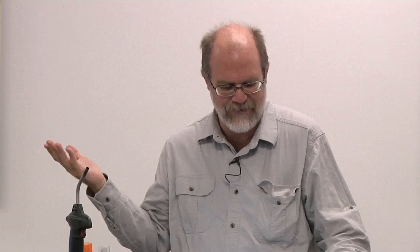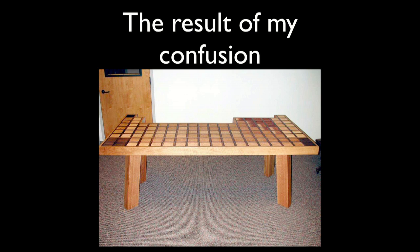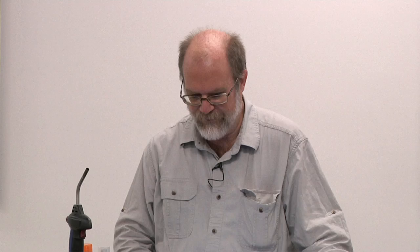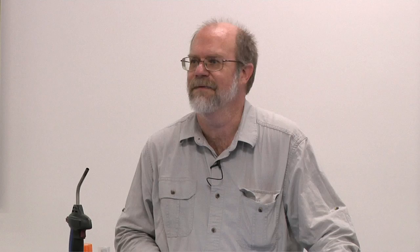That sort of gave me the idea that there ought to be a periodic table table. So I ended up building one. Because of some technicalities in how I built it, each of the element tiles ended up with a little compartment underneath. Because of that, I thought I could get some elements and put them into those compartments and collect elements. Then I discovered eBay, which was just coming into its own around 2002 or so. The whole enterprise has been a series of slippery slopes and maybe a little poor decision-making, because it just kind of got out of hand.